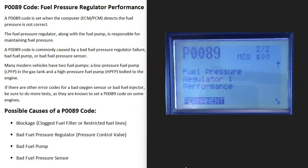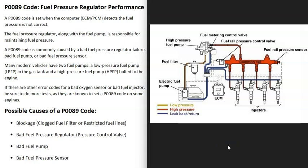Today I'm talking about a P0089 code — what it is and how you go about fixing it. A P0089 is a fuel pressure regulator performance code. Basically, fuel injectors need the correct fuel pressure so they can eject fuel into the cylinders. There's a fuel rail at the top of the engine supplying fuel to the injectors, and if the pressure isn't correct it can cause the engine to run badly. The computer is seeing that something is wrong with the fuel pressure.